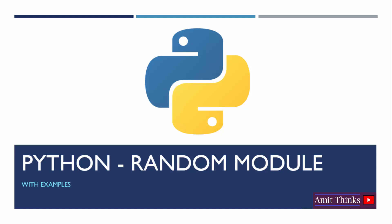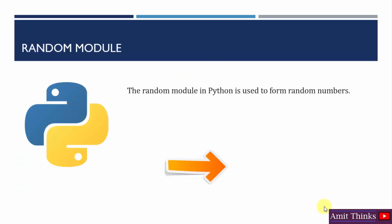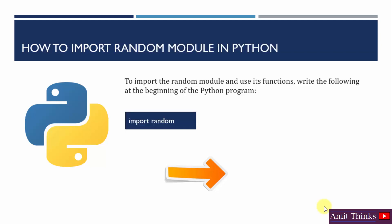In this video we will learn how to work with the random module in Python, how we can import it in a Python program, and how we can work around its functions. If you want to generate random numbers, you can use the built-in module random, which is provided by Python. You can also generate random numbers between a range. To import the random module, write import random at the beginning of your Python program.